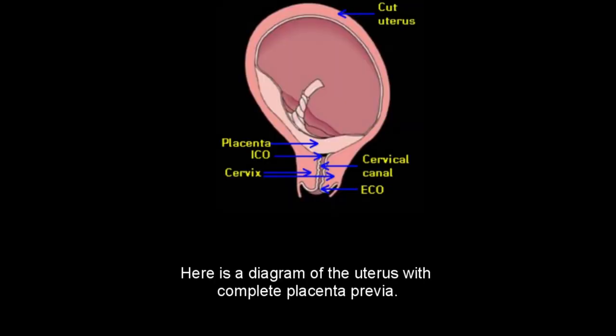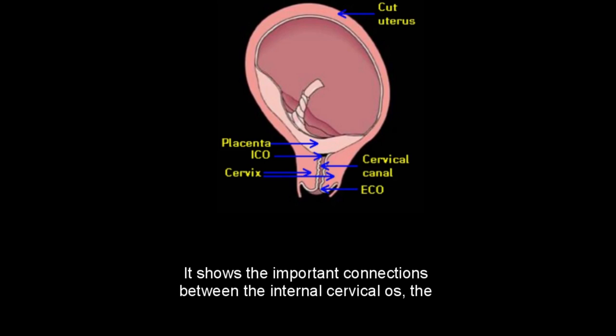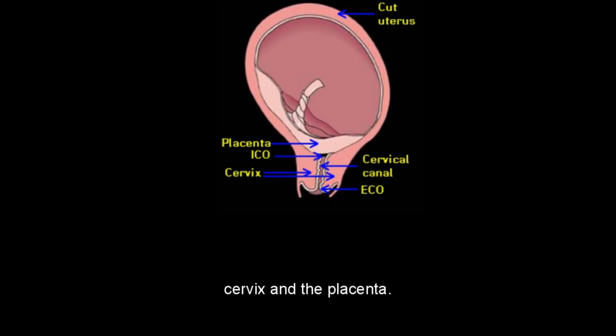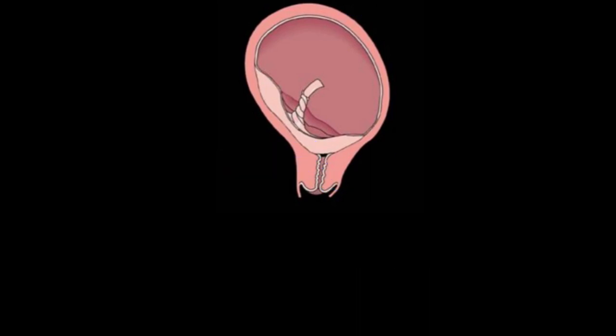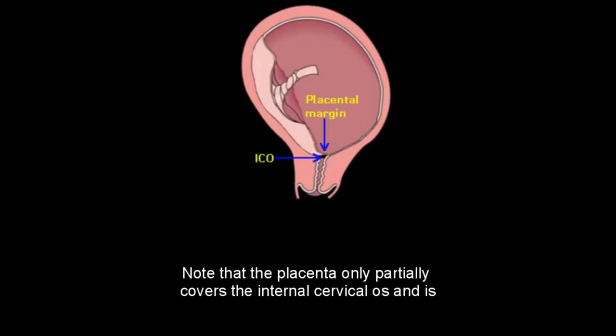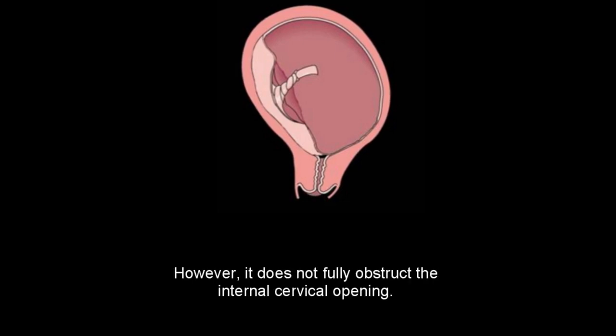Here is a diagram of the uterus with complete placenta previa. It shows the important connections between the internal cervical os, the cervix, and the placenta. You can also see the cervical canal and the external cervical os. Note that in incomplete placenta previa, the placenta only partially covers the internal cervical os and is located within 2 centimeters from the internal os, but does not fully obstruct the internal cervical opening.